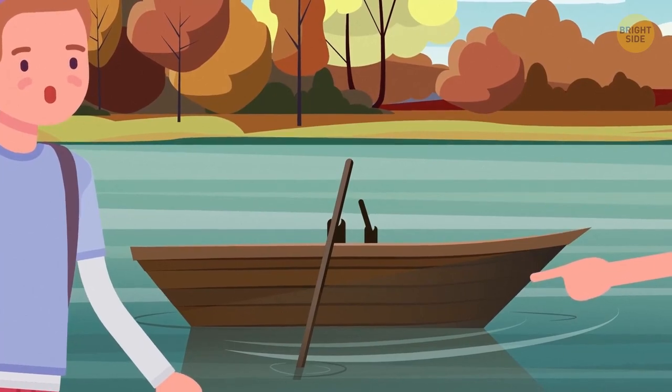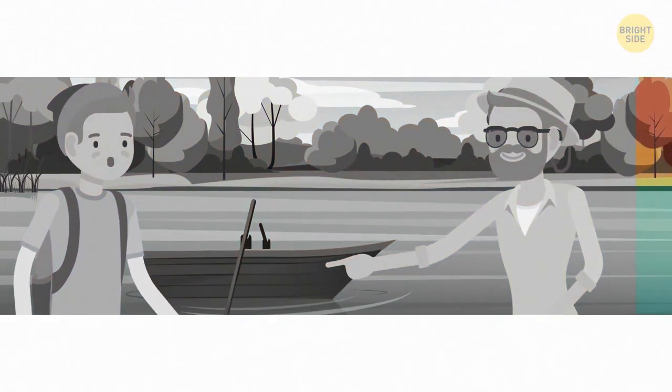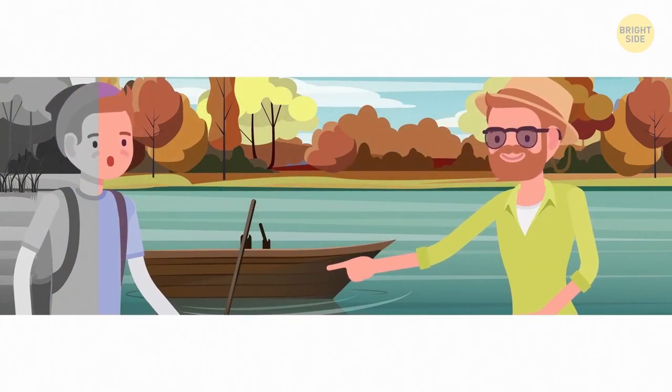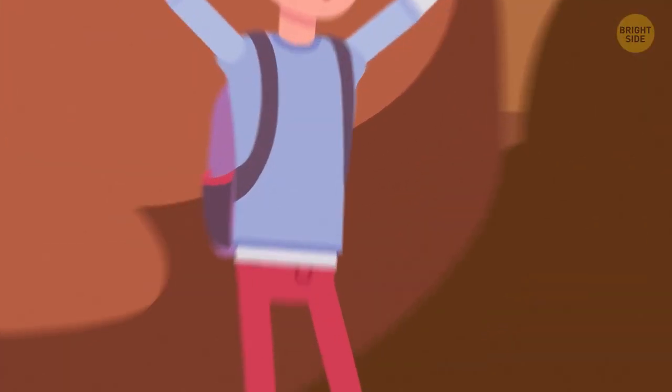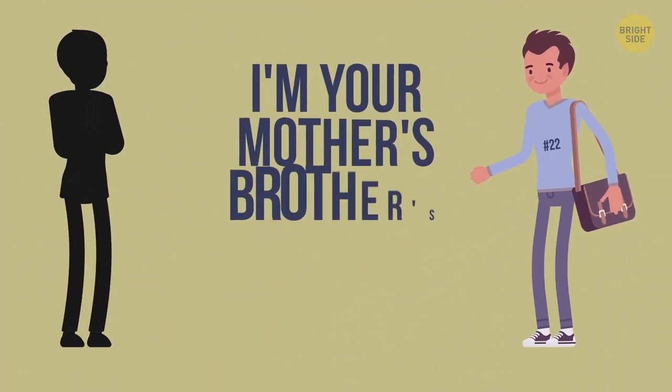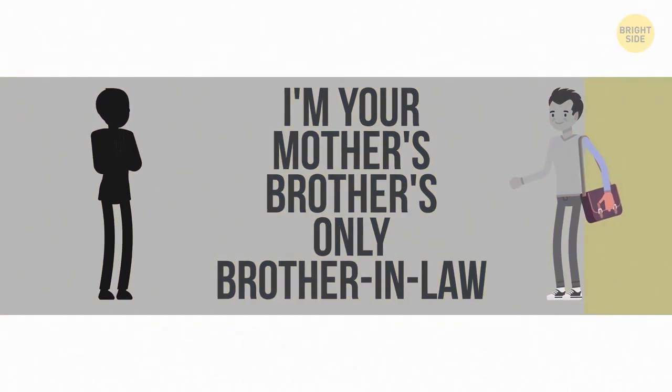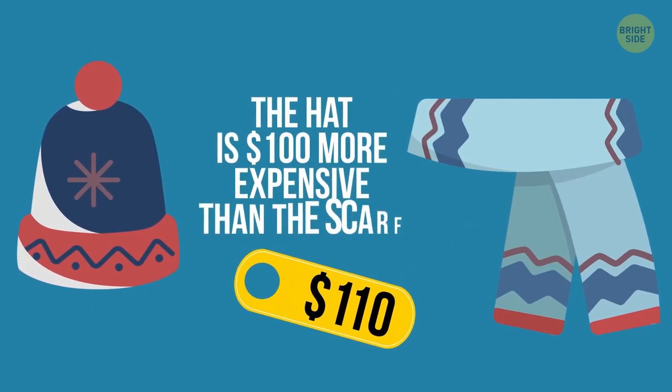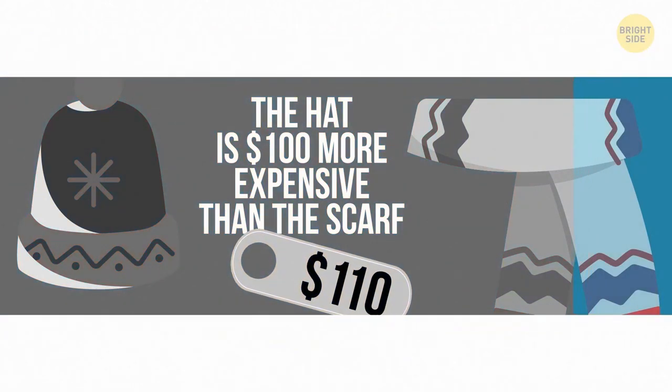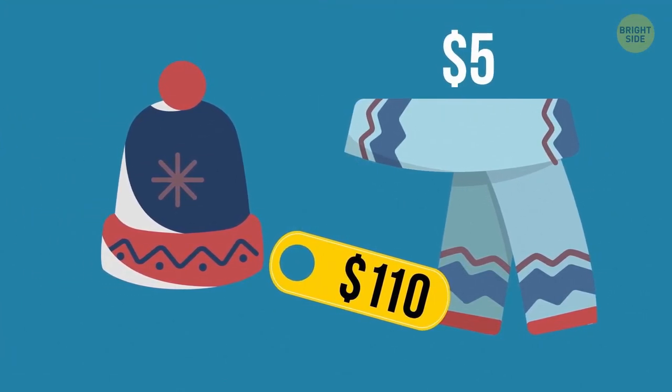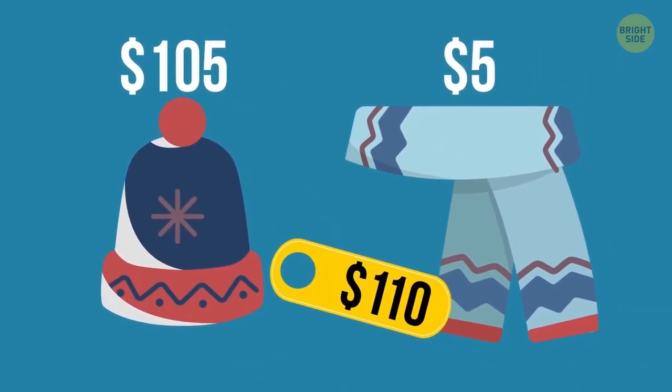21. There are two people standing near the river. A boat can carry only one of them. And still, they managed to get to the other bank. How come? These people were on different banks. 22. I'm your mother's brother's only brother-in-law. Who am I to you? Your father. 23. A hat and scarf cost $110. The hat is $100 more expensive than the scarf. How much does the scarf cost? $5. It means that the hat is $105, which is exactly $100 more than the scarf. How you doing? Good? Okay, let's move on.